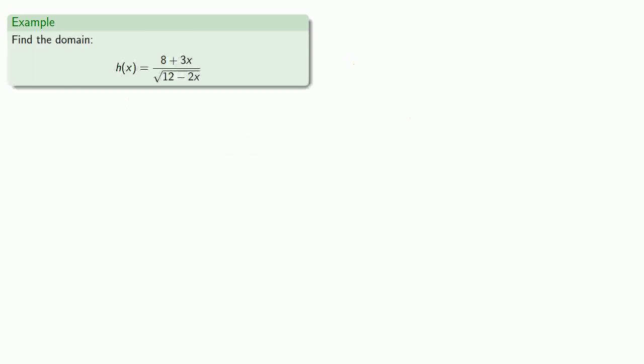How about a horrible, frightening function? Well, actually this isn't too bad, as long as you keep in mind that the type of expression is determined by the last operation you perform. This is a quotient — the last thing we do is divide (8 + 3x) by the square root of (12 − 2x).